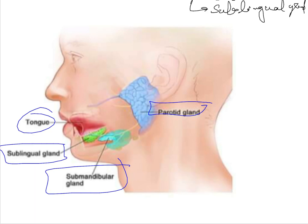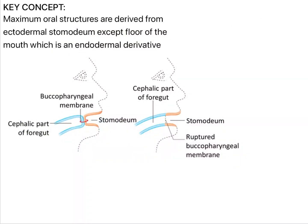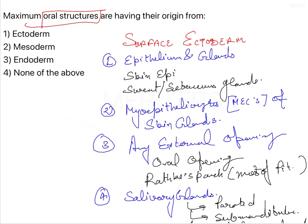The floor of the mouth is not derived from the ectoderm but is derived from the endoderm. The key concept: maximum oral structures are derived from ectodermal stomodeum, except the floor of the mouth which is an endodermal derivative. Coming back to the question — the answer is the first option, that is the ectoderm.